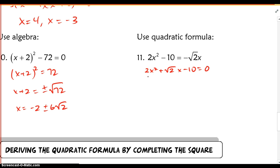So you could try to split the middle term here. You can try to factor this, but it's not factorable. There are no two numbers that will multiply to negative 20, but also add up to root 2. So if you can't quickly factor, use the quadratic formula.